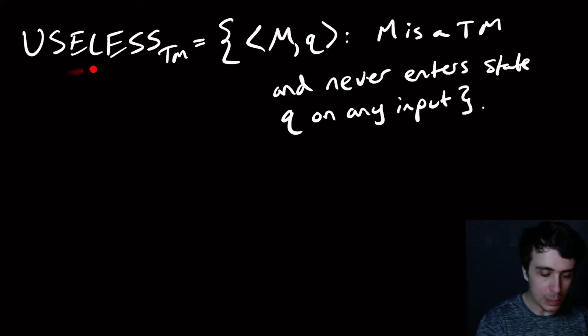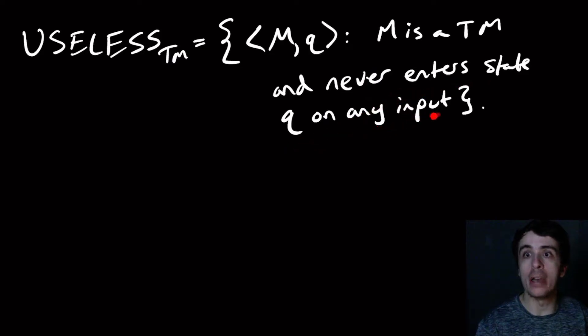We're going to concern ourselves with this problem today, which is about useless Turing machines. We have inputs that are a Turing machine with a state, and the quantification is M is a Turing machine and never enters q on any input whatsoever.